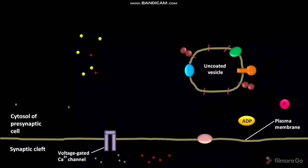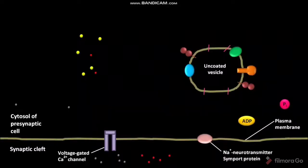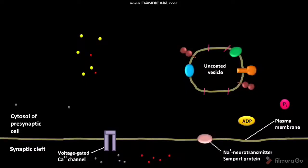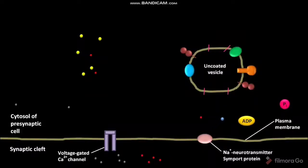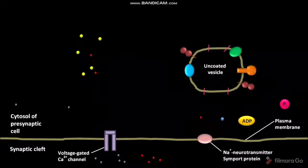The plasma membrane of the presynaptic cell has a Na+/neurotransmitter symport protein. At the same time as the pinching of the clathrin-coated vesicle, the Na+ ions and the neurotransmitters present in the synaptic cleft are symported through the Na+/neurotransmitter symport protein into the cytosol of the presynaptic cell. As a result, the presynaptic cell is partially recharged with neurotransmitter.